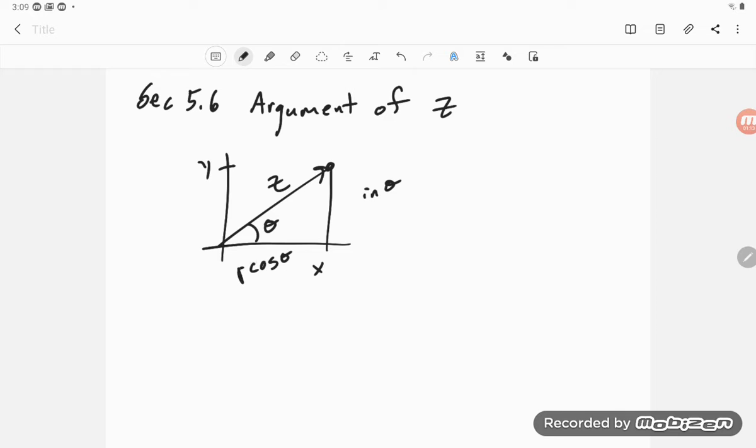Okay, this is r if that length is r. And then this is r sine theta and r cosine theta. r squared is x squared plus y squared.